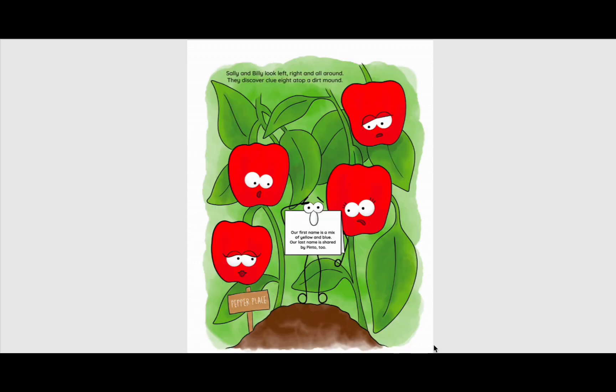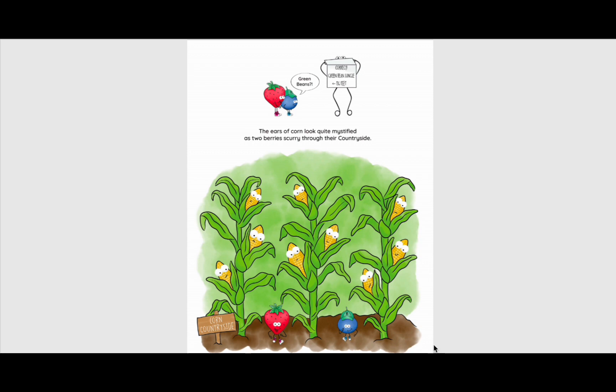Sally and Billy look left, right, and all around. They discover clue eight atop a dirt mound. Our first name is a mix of yellow and blue. Our last name is shared by Pinto, too. Green beans. Correct. Green bean jungle. The ears of corn look quite mystified as two berries scurry through their countryside.